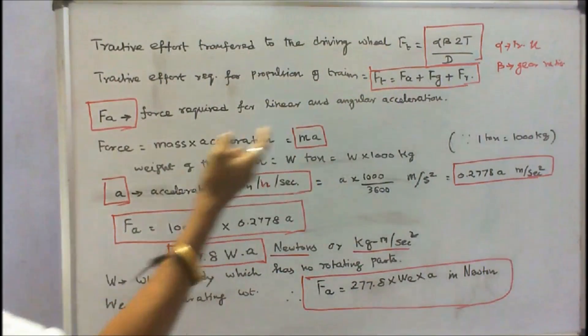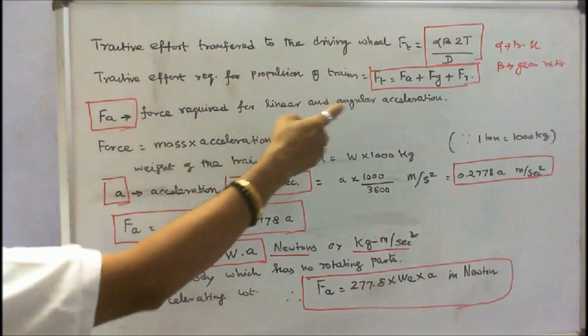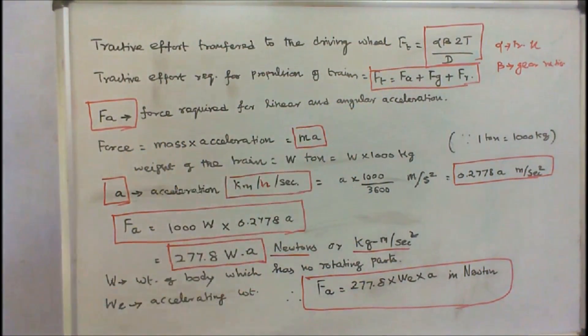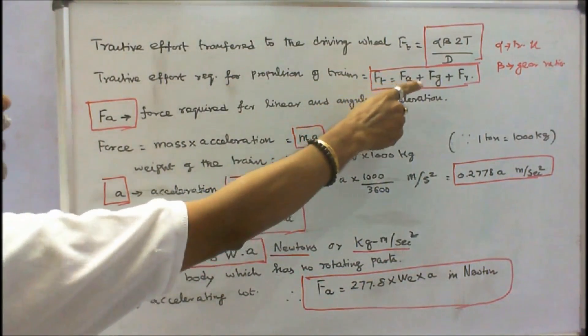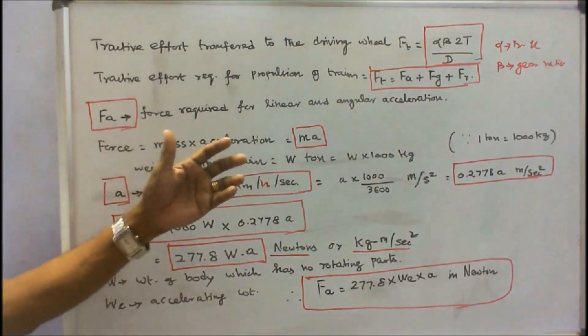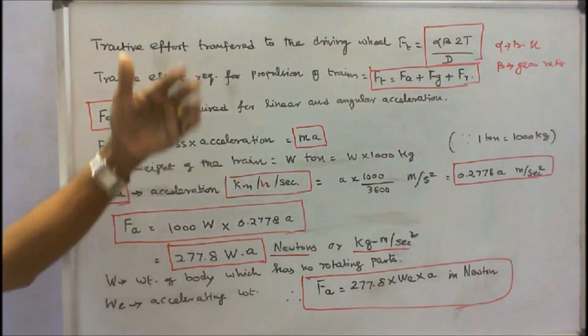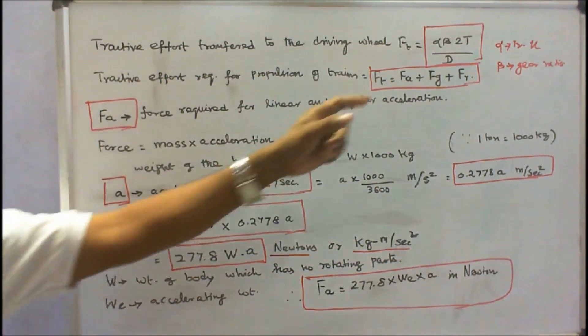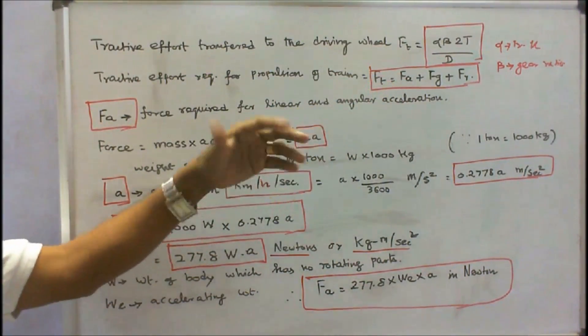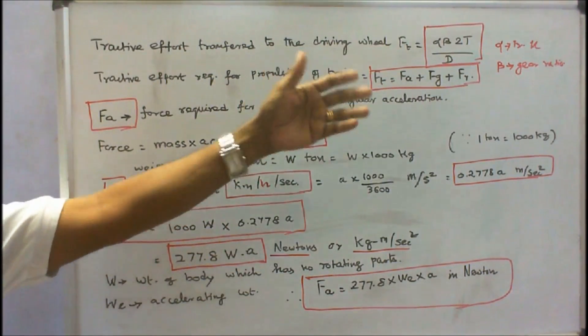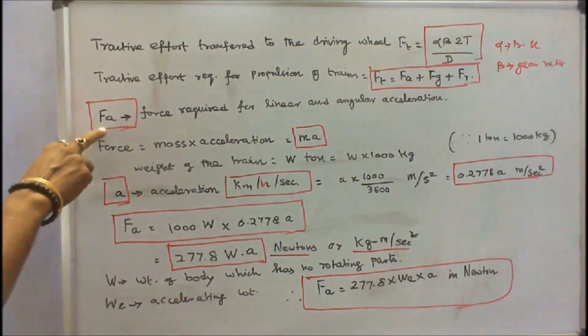Tractive effort required for propulsion of a train comprises 3 forces. One is FA, force required for linear and angular acceleration. Number 2, FG, force required to overcome the effect of gravitation. Number 3, force required to overcome the effect of train resistance.